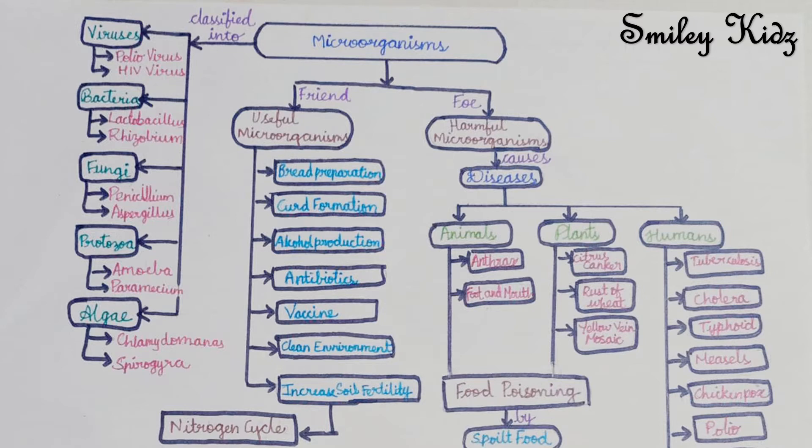Now let's come to the next part of microorganisms. Microorganisms are friends and foes. What are friends? Friends means they are useful, friendly microorganisms means useful microorganisms. What about foe? Foe means harmful, so it means harmful microorganisms. Microorganisms can be either useful or harmful.